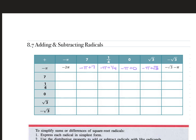For 7: 7 minus pi, or 7 plus negative pi, which is the same as 7 minus pi. 7 plus 7 is 14. 7 plus one-fourth is 7 and one-fourth. 7 plus 0 is 7. 7 plus the square root of 3. And 7 minus the square root of 3.